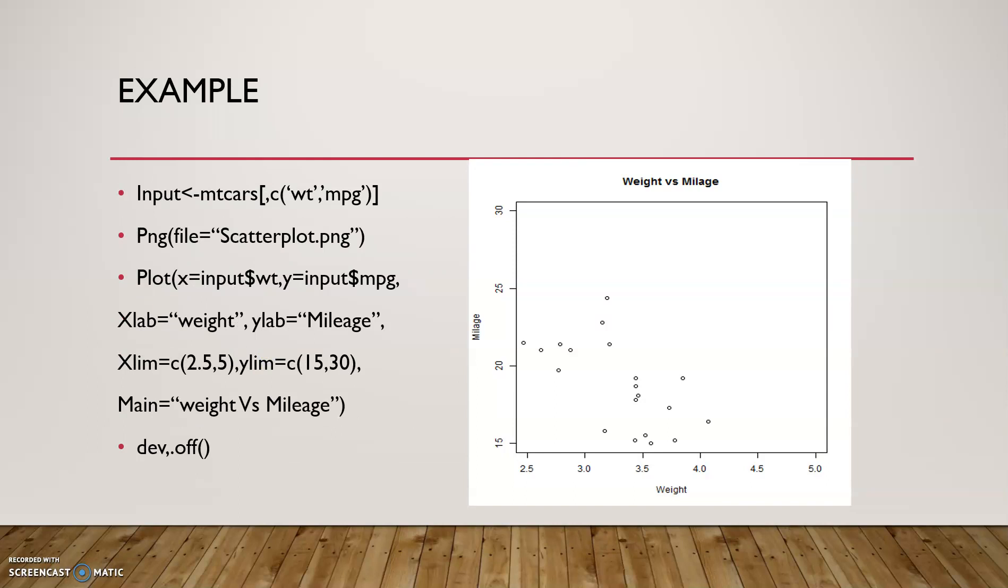Example of scatter plot. Now we use the mtcars as an example. Chart name is scatterplot.png. Then xlab, ylab values to give the x and y labels. main is weight versus mileage. Thank you.